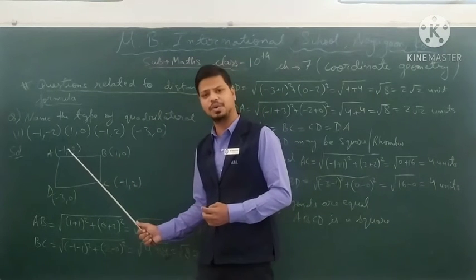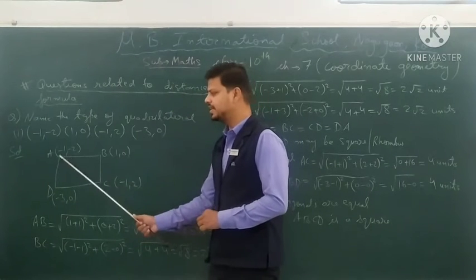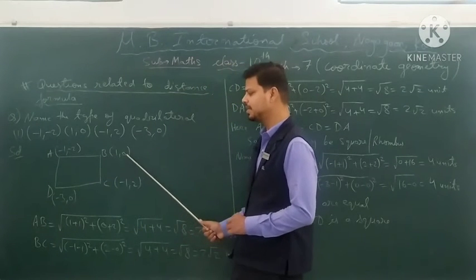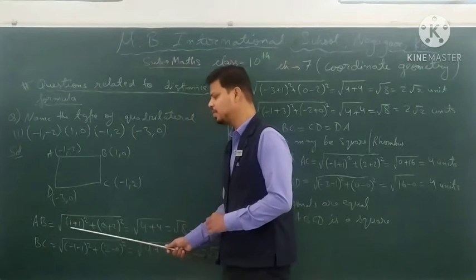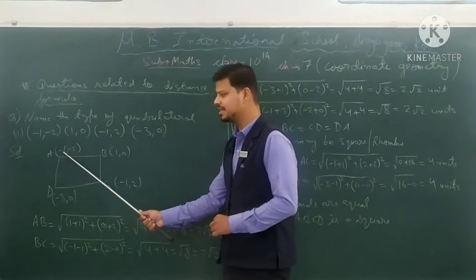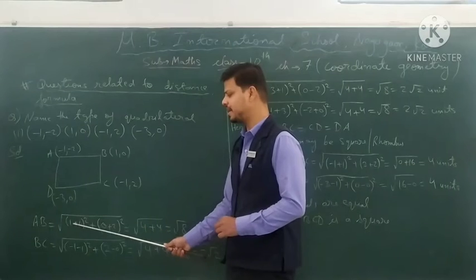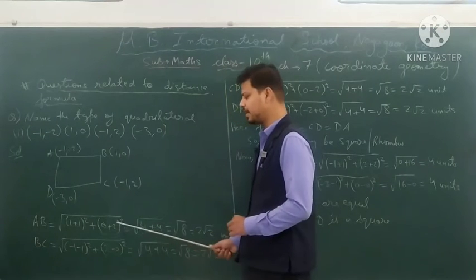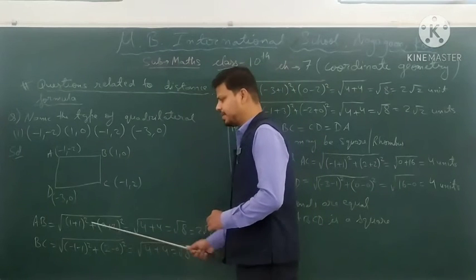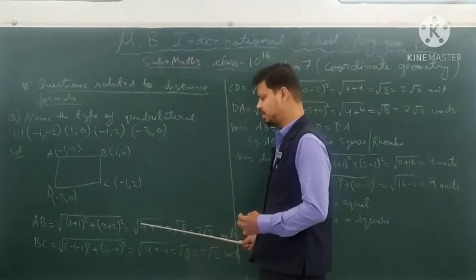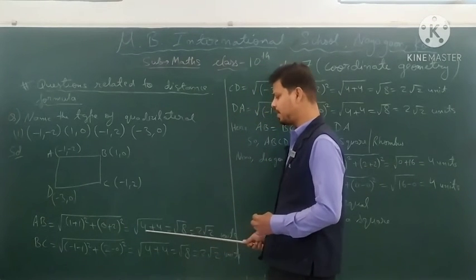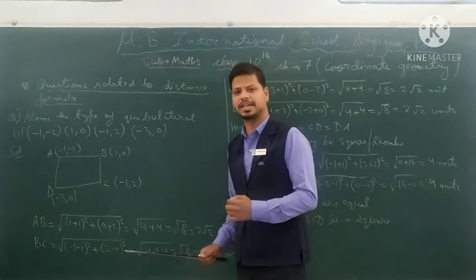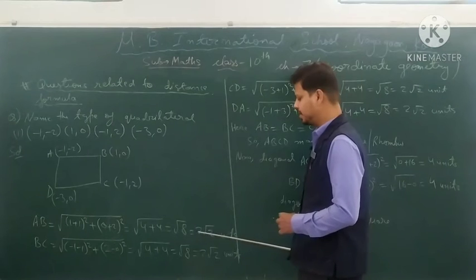Now we calculate AB. Point A is (−1, −2) and point B is (1, 0). Using the distance formula: √[(1−(−1))² + (0−(−2))²] = √[(2)² + (2)²] = √[4 + 4] = √8 = 2√2 units.